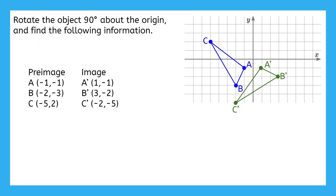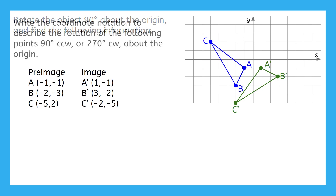Here's the first problem from our performing rotations lesson. We had rotated the preimage 90 degrees about the origin. Now we're supposed to find the coordinate notation to describe what happened to the points when they were rotated 90 degrees counterclockwise, or 270 degrees clockwise, about the origin.